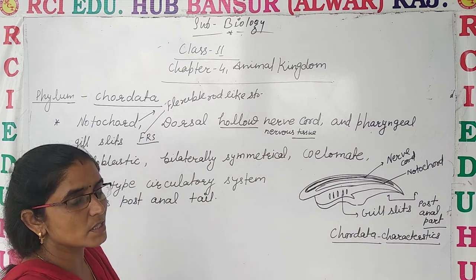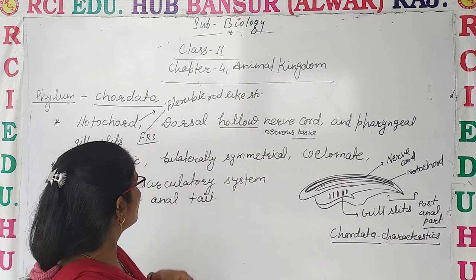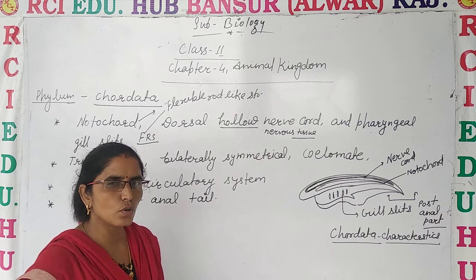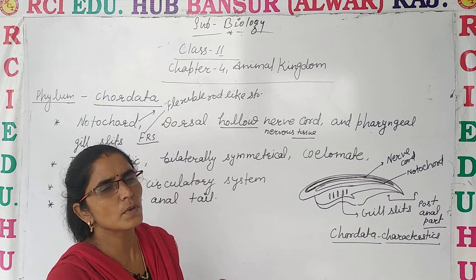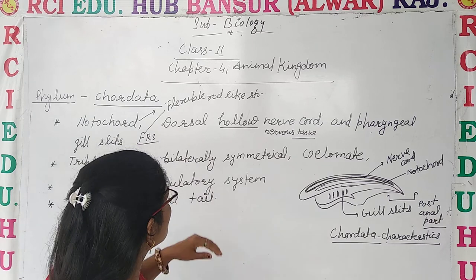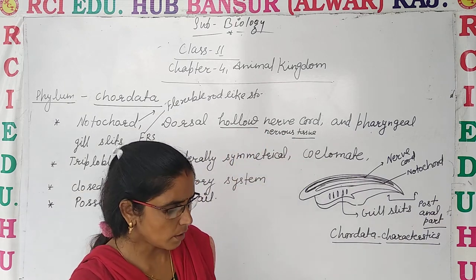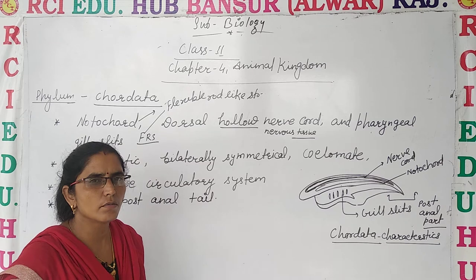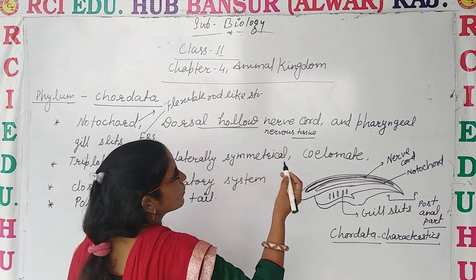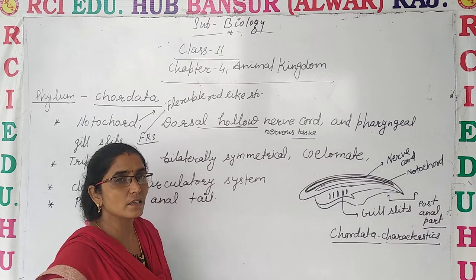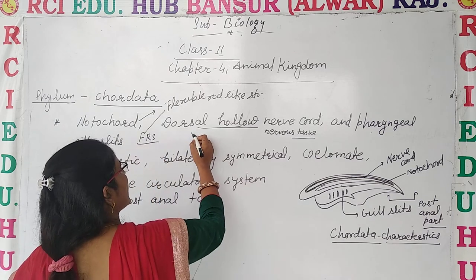So let's understand that non-chordates and chordates are different. First of all, it is clear that the notochord is present in chordates and absent in non-chordates. The other thing is that the hollow nerve cord is present. The nerve cord relates to nervous tissue, and it is present in the upper part.